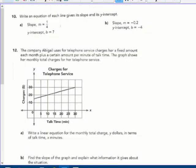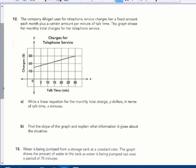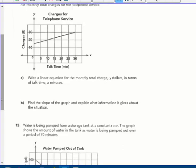On this page, I'm going to do number 12. The company Abigail uses for telephone service charges her a fixed amount each month plus a certain amount per minute of talk time. The graph shows her monthly total charges for her telephone service. Part A, write a linear equation for the monthly total charge Y dollars in terms of talk time X minutes. So to write an equation, I need my initial amount, or what's my Y intercept, where it's starting, right? There's a fixed fee, which I can see here is $15.